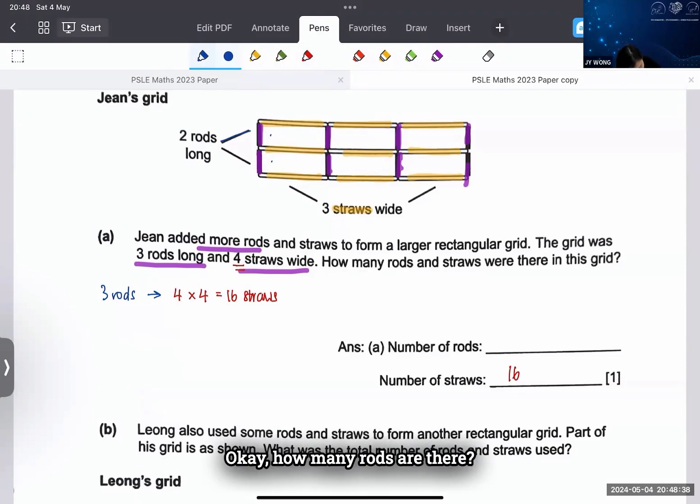How many rods are there? If you have 4 straws: one, two, three, four, how many rods will you see? One... okay, use another color: one, two, three, four, five. Can y'all see? So for 4 straws, you will be able to see 5 rods.